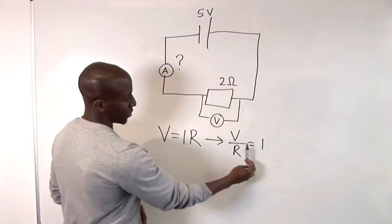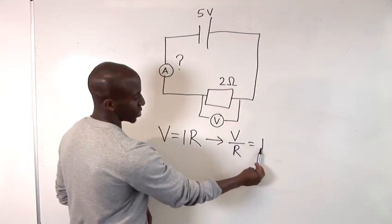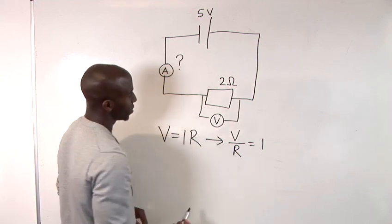So we have V over R equals I, which is your current.